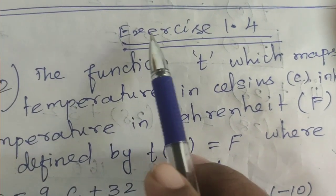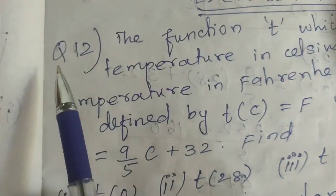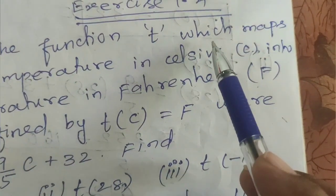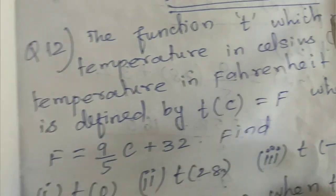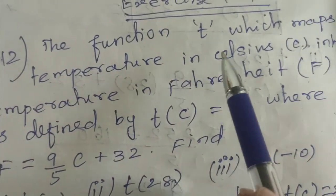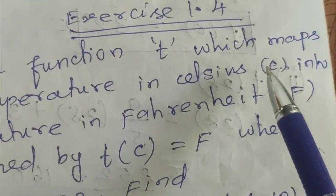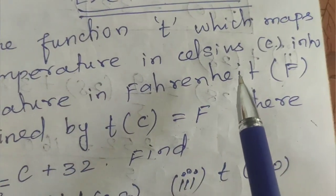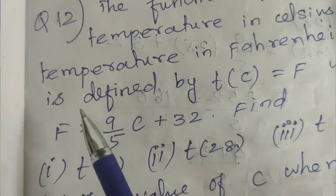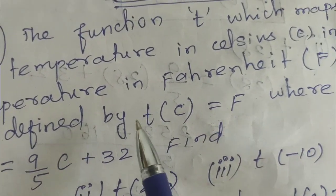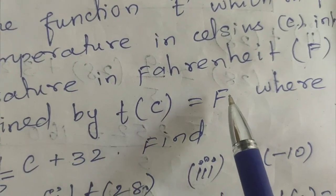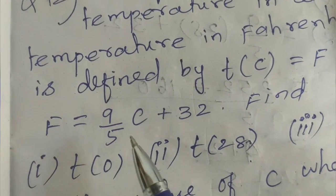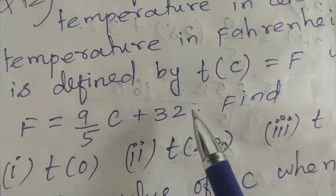10th Maths Exercise 1.4, Question number 12. The function T, which maps temperature in Celsius C into temperature in Fahrenheit F, is defined by T of C equals F, where F equals 9 by 5 times C plus 32.